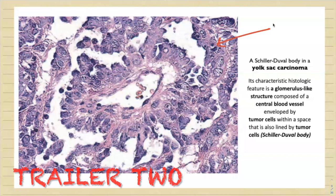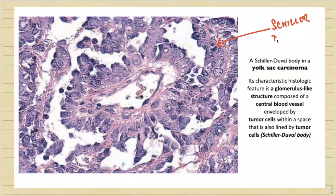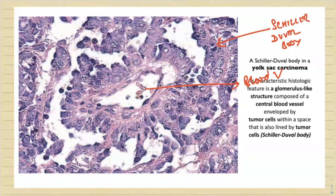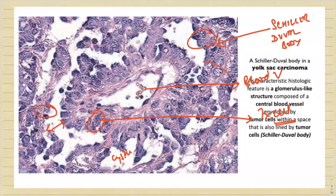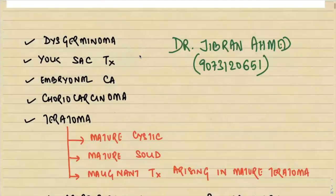This is the characteristic Schiller-Duval body. At the center there is a fibrovascular core — a central blood vessel — surrounded by a layer of tumor cells. This entire structure is suspended in a cystic space, which itself is also surrounded by tumor cells. So the classical Schiller-Duval body is a central blood vessel surrounded by tumor cells within a space which is itself surrounded by tumor cells.